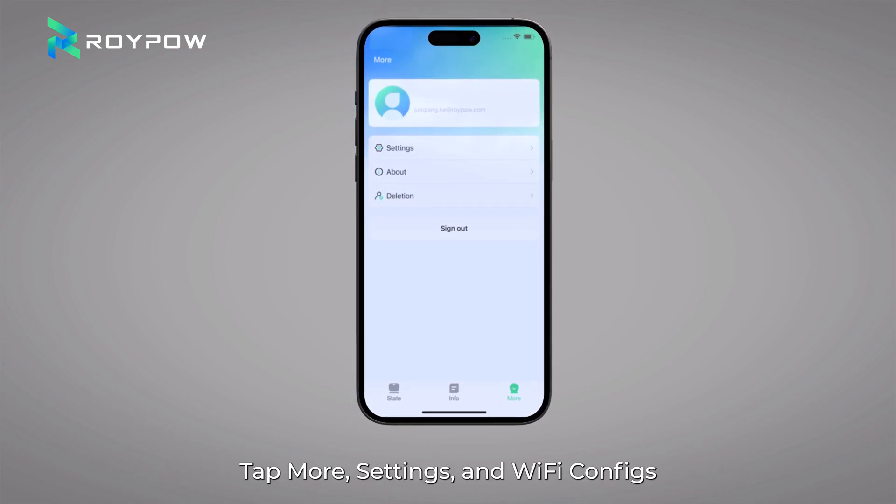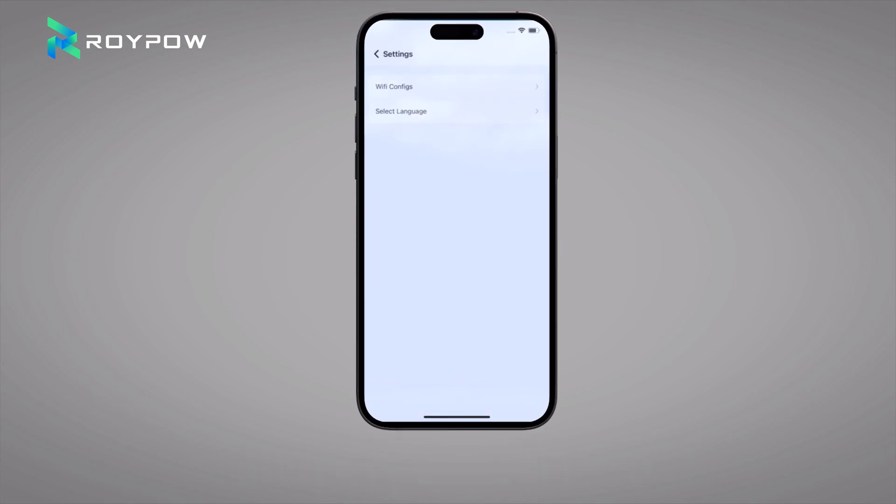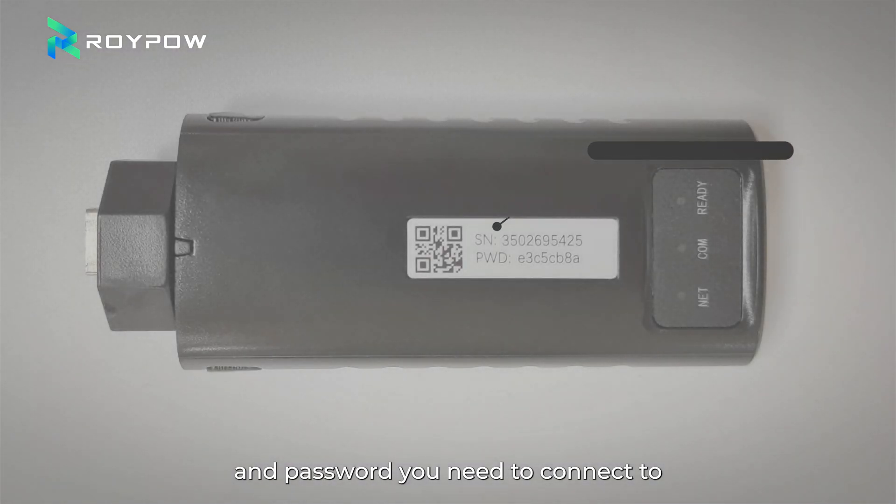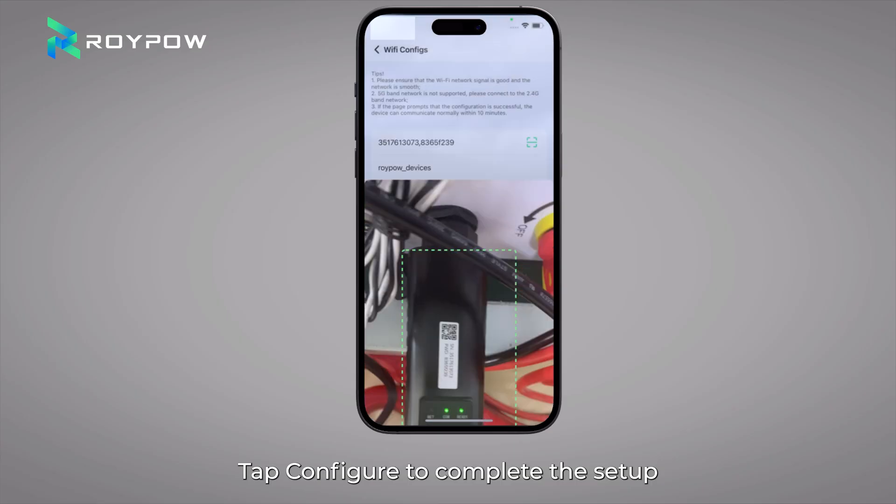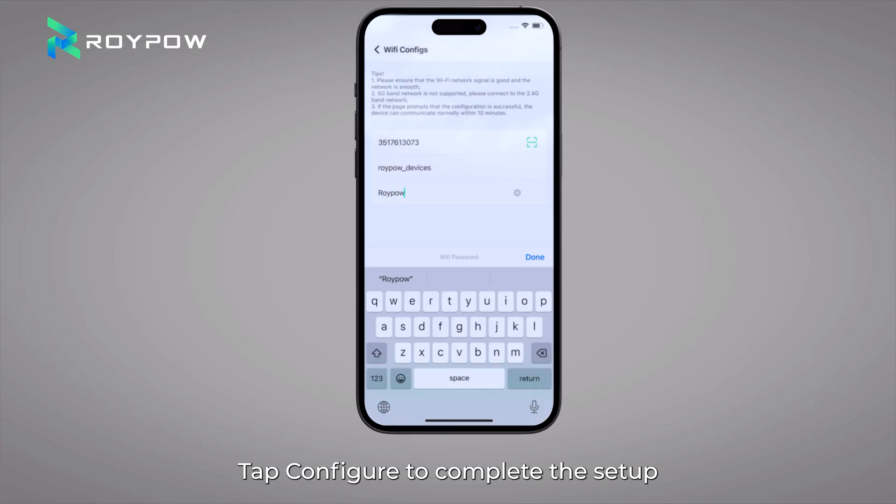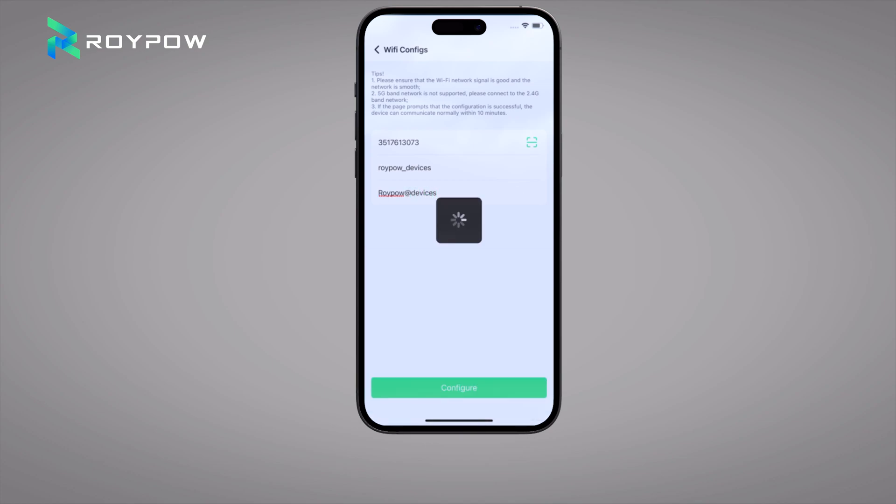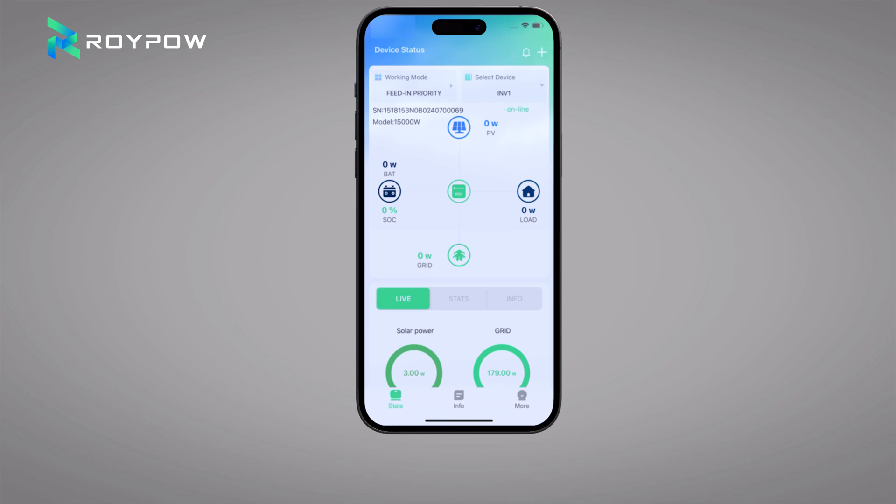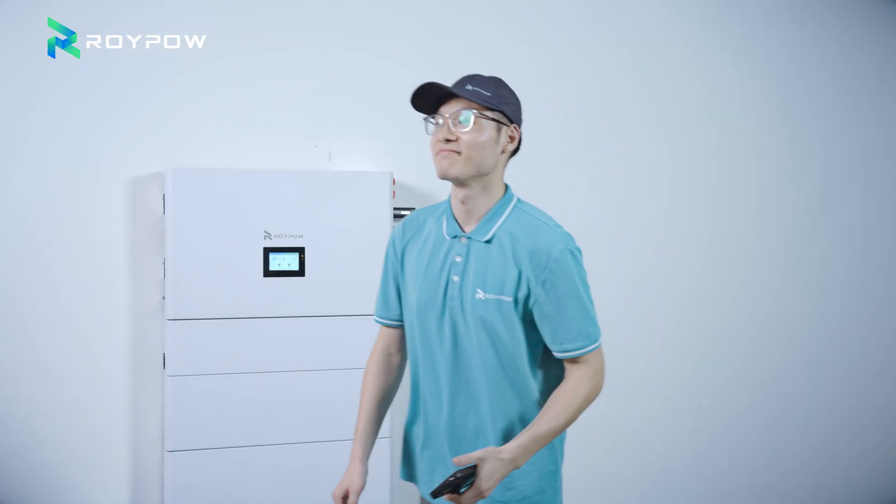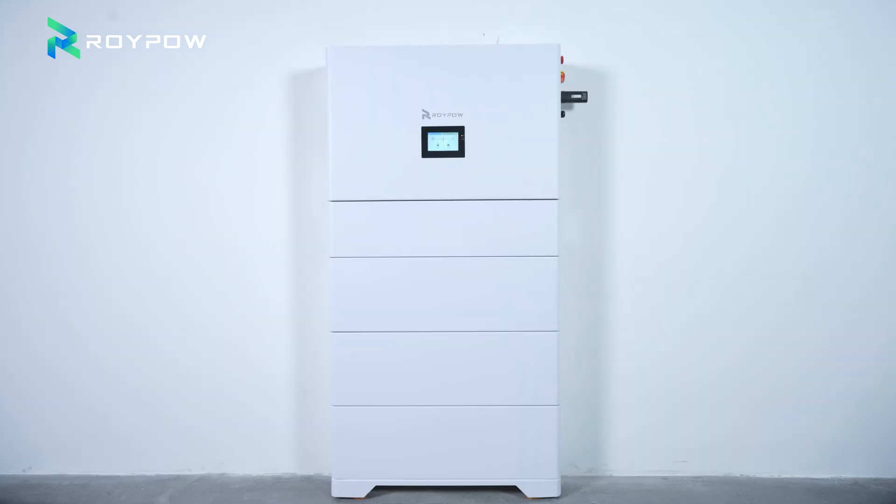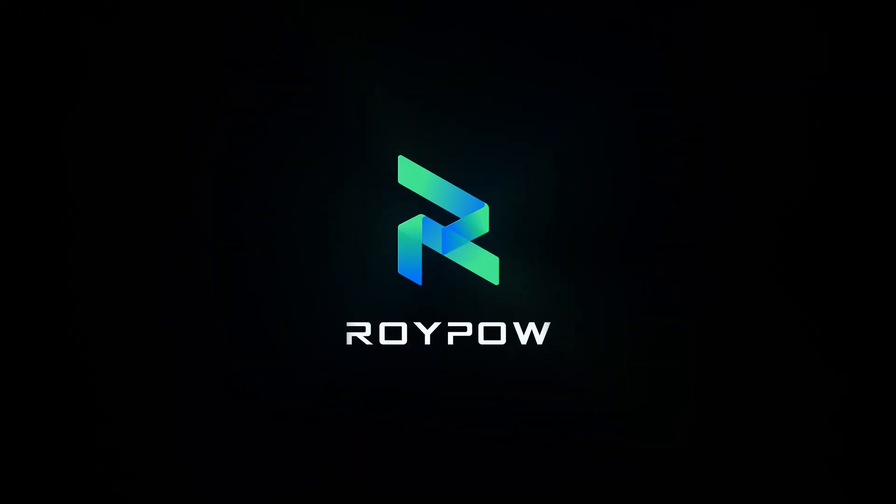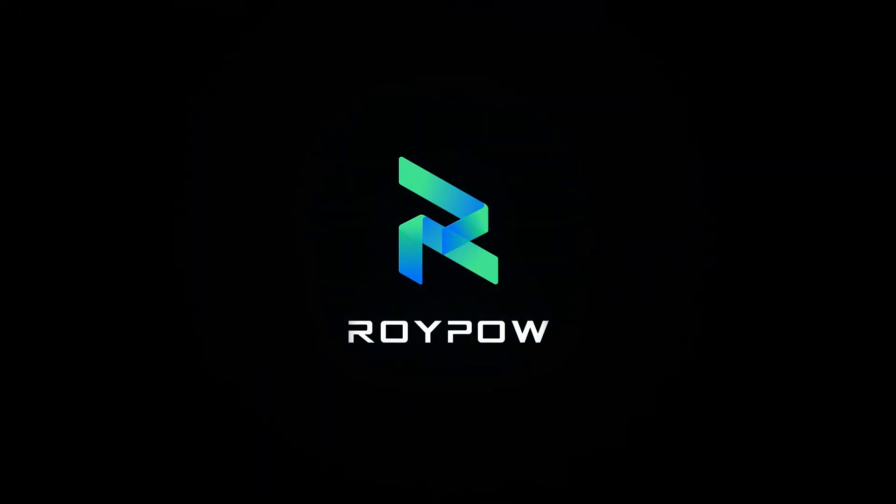Tap more, settings, Wi-Fi configs. Scan the QR code on the stick logger. Enter the Wi-Fi account number and password you need to connect to. Tap configure to complete the setup.